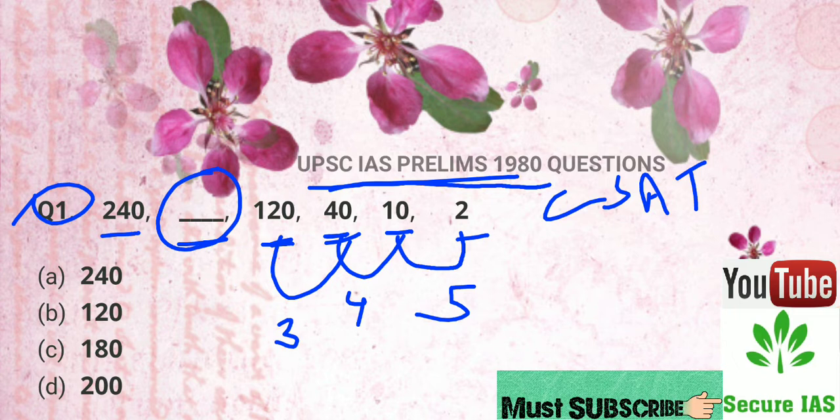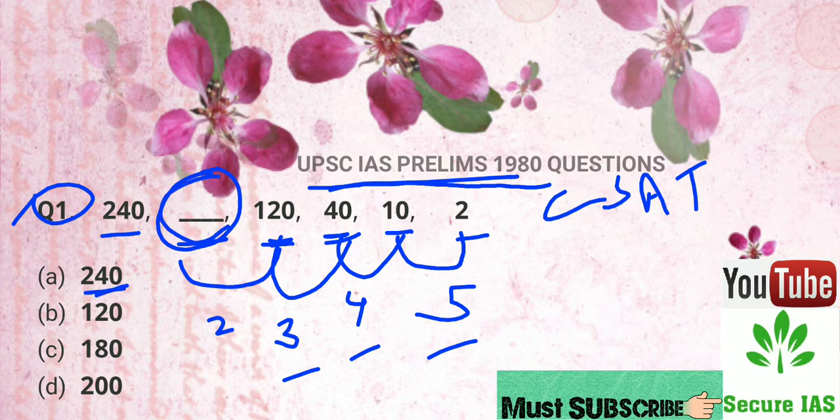So you are watching that I am getting 5, 4, 3 as a number pattern, then the next number will be 2. So when we multiply 120 by 2, then we will get 240.